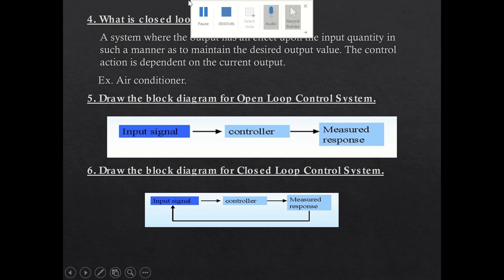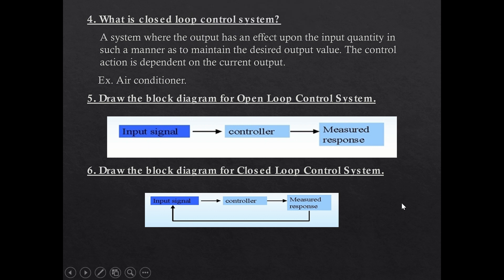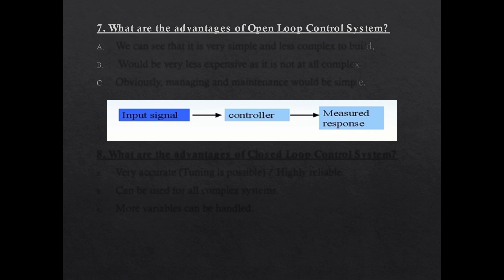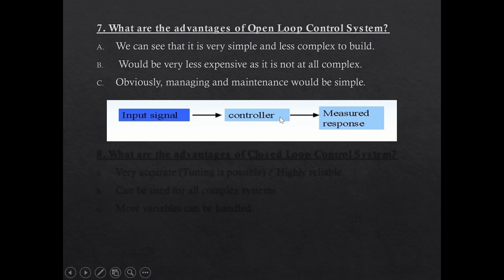In interviews they may ask you to differentiate closed loop and open loop systems. What are the advantages of an open loop control system? It is very simple and not complex at all — there is an input, it is processed, and you get an output. It is less expensive since it is not complex, and managing and maintenance are very simple as there are no feedback algorithms or mechanisms involved. It is straightforward: feed input, get output.